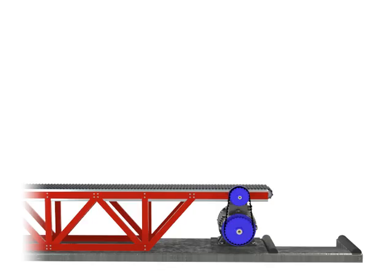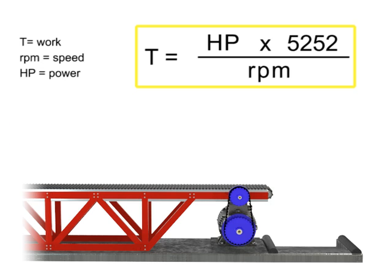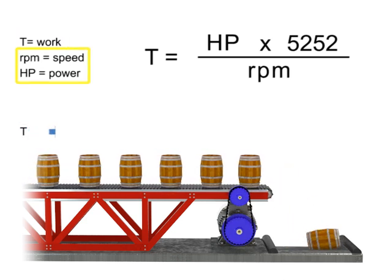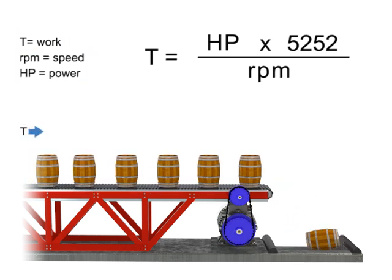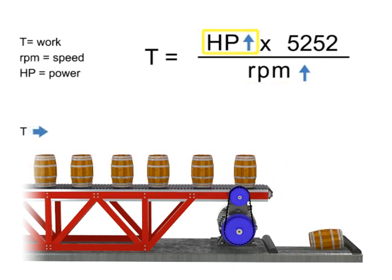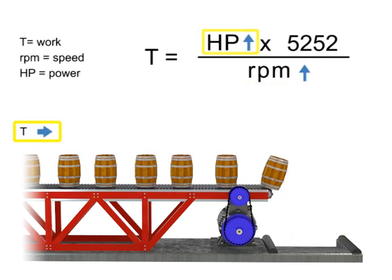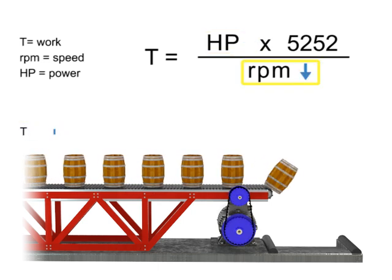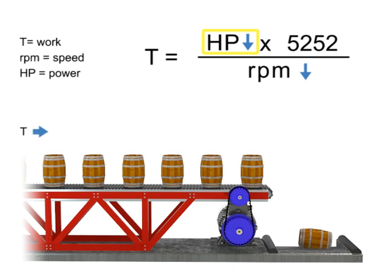You can manipulate the connection among speed, torque, and horsepower by understanding how they are related. The work accomplished here — the torque — is represented by the weight moving along the conveyor. If torque remains constant, speed and horsepower are proportional. As the speed, or RPM, increases, horsepower increases to maintain constant torque. If speed decreases, horsepower decreases to maintain constant torque.